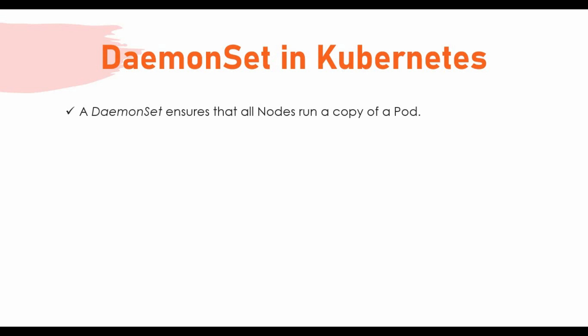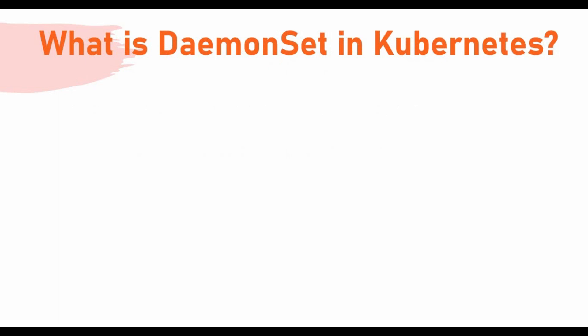What DaemonSet does is it ensures that all the nodes in a Kubernetes cluster will have a copy of a pod. When new nodes are added to the cluster, pods are also added to that node. The same way, if some nodes are getting deleted from the cluster, the pod on that node will be garbage collected or deleted.